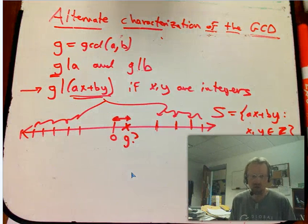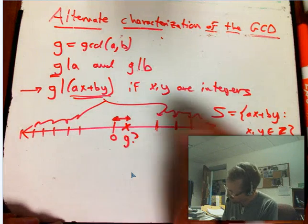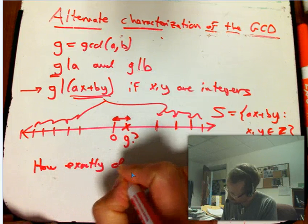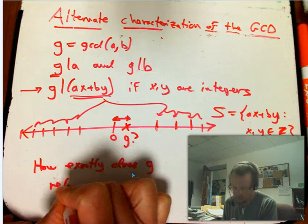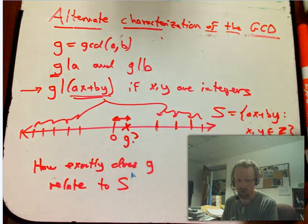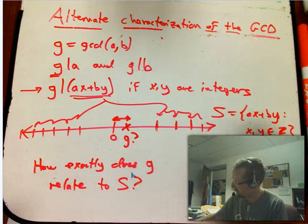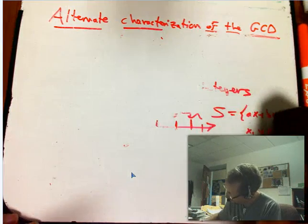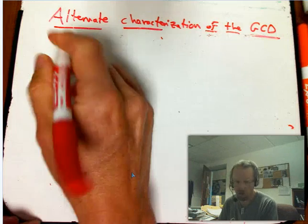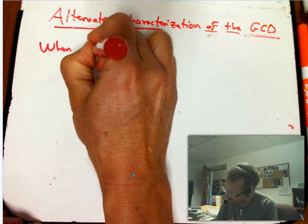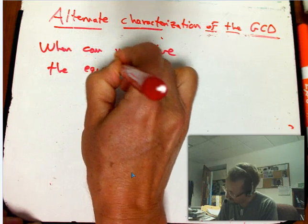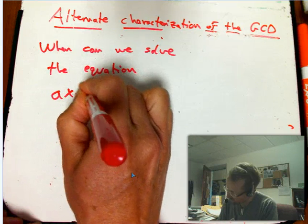Well, it turns out the picture is actually simpler than that. But it motivates the question, how exactly, how precisely can we say, how exactly does G relate to this set of linear combinations? So let me say it in another way, and then I'll show you how we really totally understand this already because of the amazing and beautiful Euclidean algorithm.